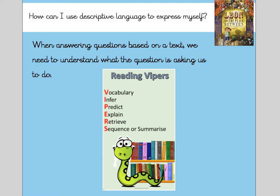We have V for vocabulary, so that's all our word meanings. I for inferring — trying to read between the lines and decide what the author is trying to tell us. It might be that you infer about a character, about how they're feeling, for example. P for predict, E for explain — so that's when we use evidence from the text to help us. R for retrieve, which is where you take things straight from the text, and S for sequence or summarise.